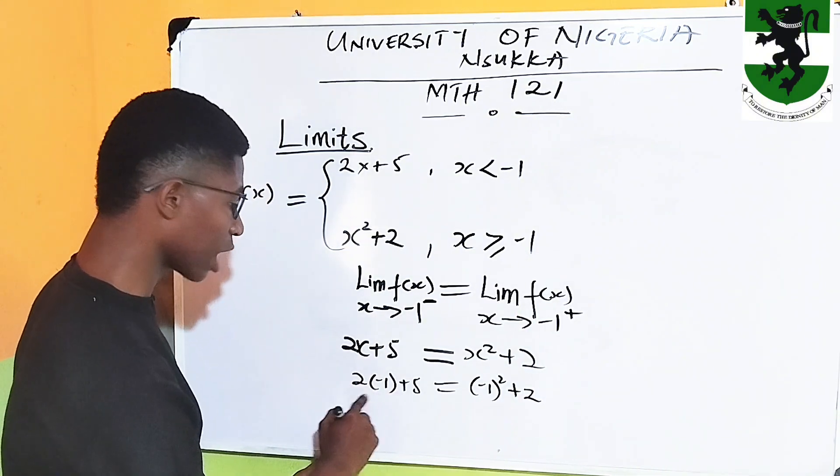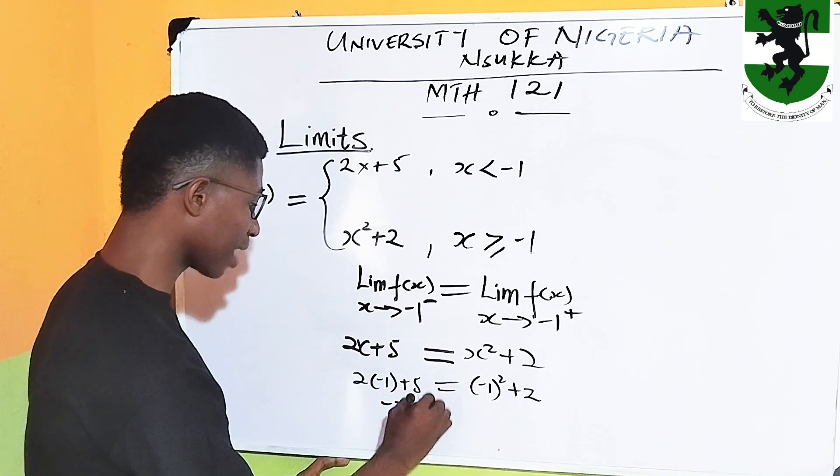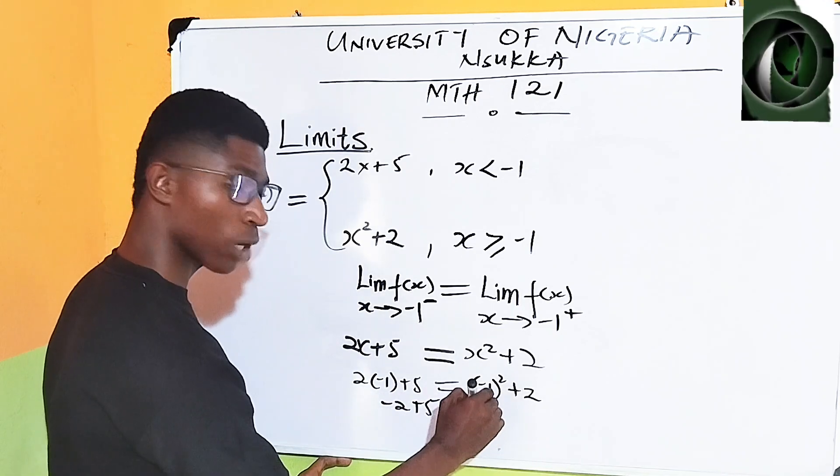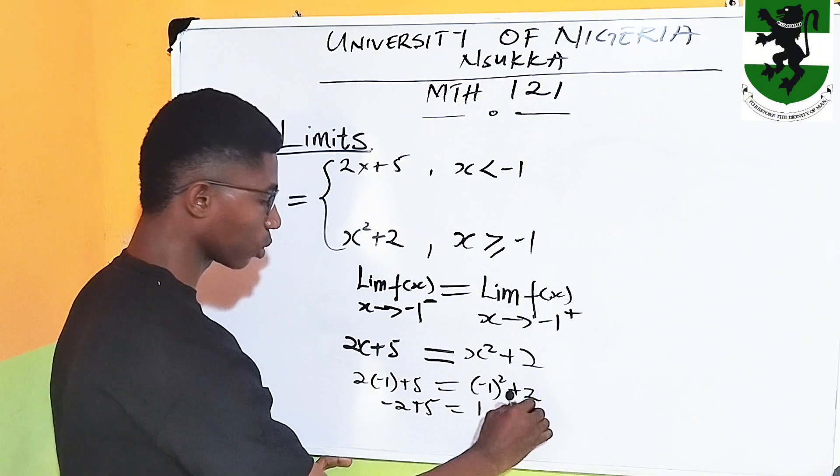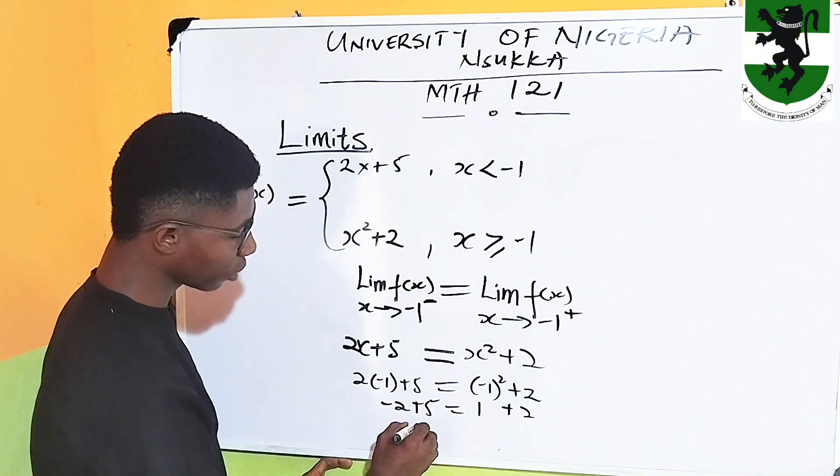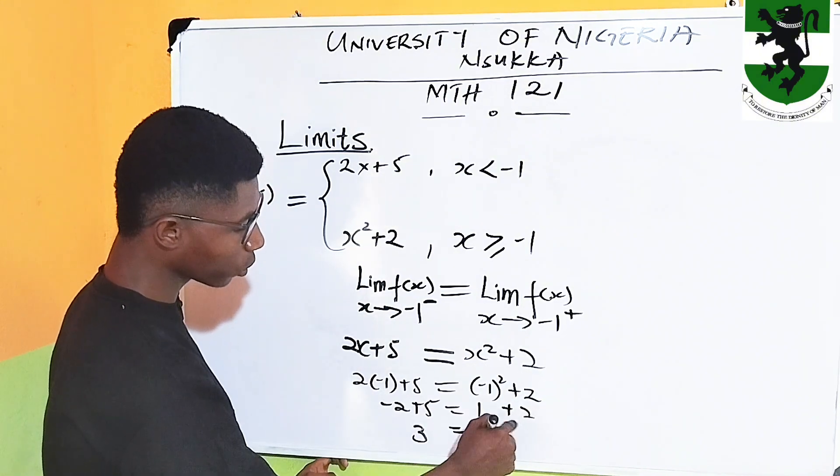Let's simplify. We have 2 times minus 1 is minus 2 plus 5 is equal to minus 1 squared is 1, right? Now, plus 2. Minus 2 plus 5 is 3 equals to 1 plus 2 is 3.